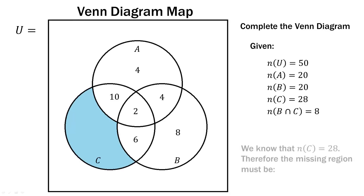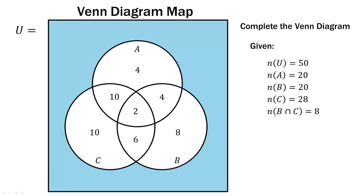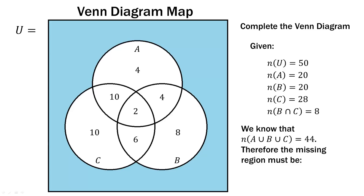Now we're going to find the missing part of C, which is U. We know that C has to equal 28. Therefore that missing region is 28 minus the 10 we know, minus the 2 we know, minus the 6 we know — so 28 minus 10 minus 2 minus 6 equals 10. So we can put 10 there. Now for the outside region: if we add up everything inside A, B, and C — that's the union — it comes out to 44. So since everything in the universal set is 50, and everything inside A, B, or C equals 44, then outside must be 6. And that is the end of this problem.